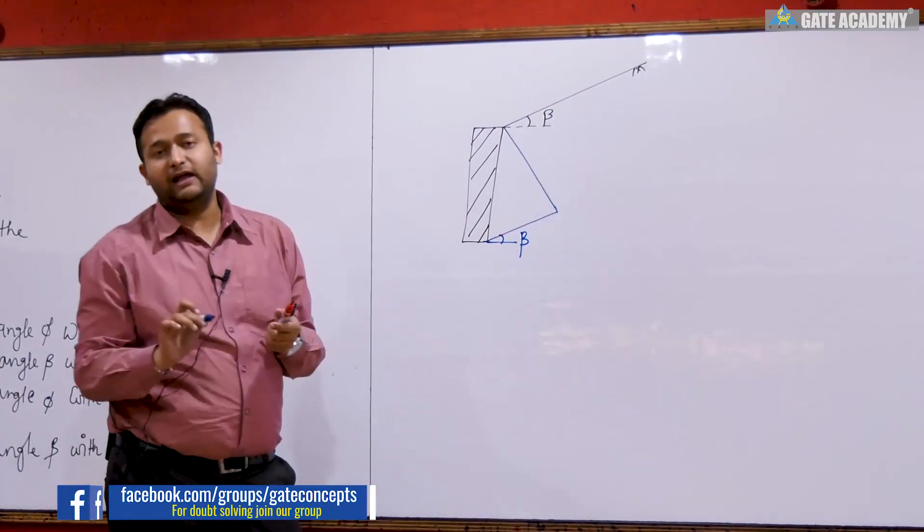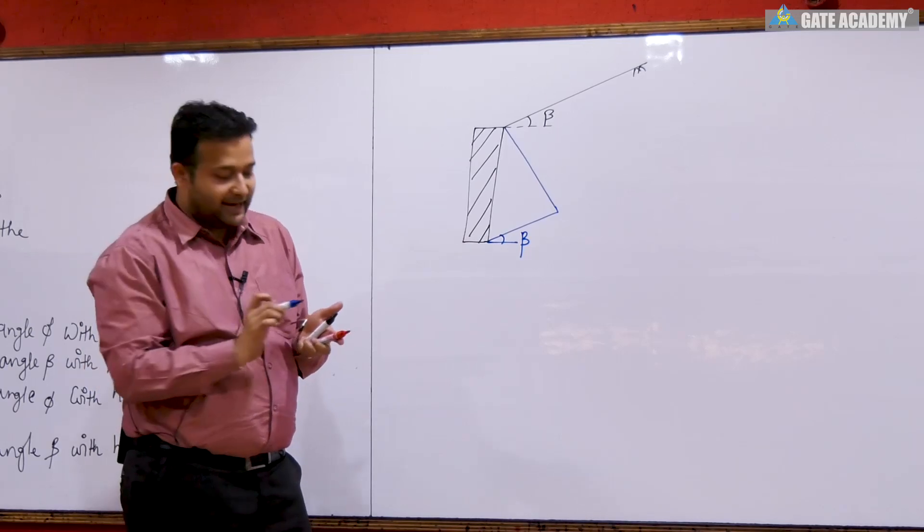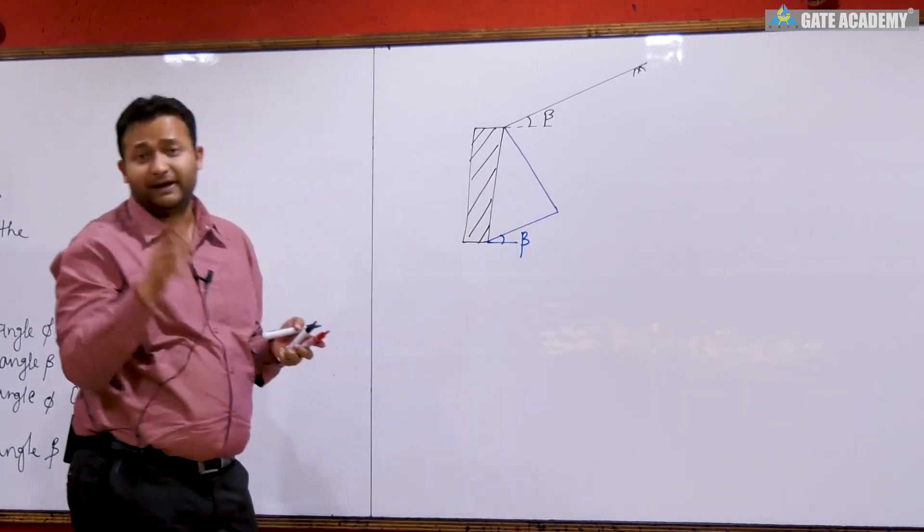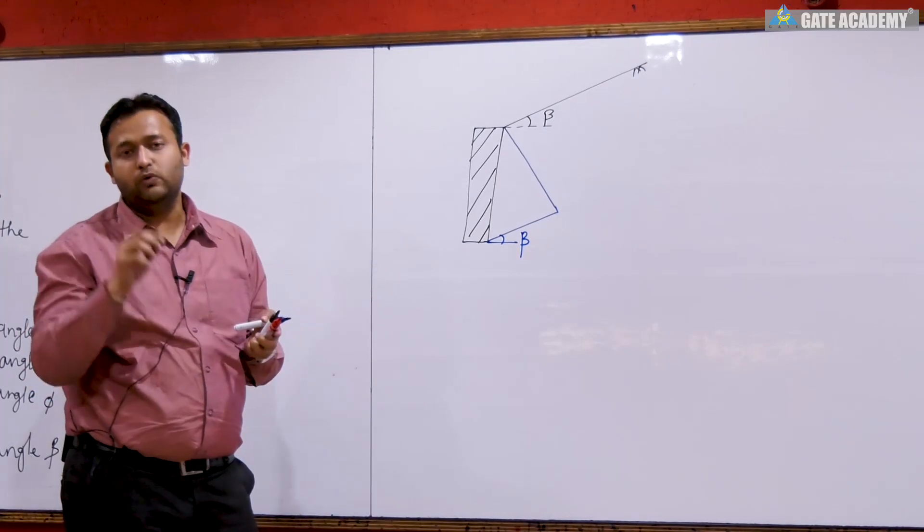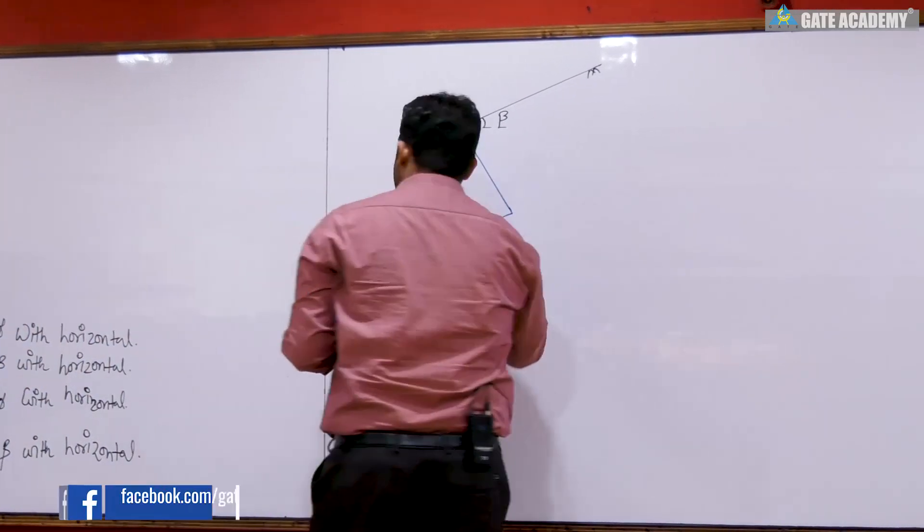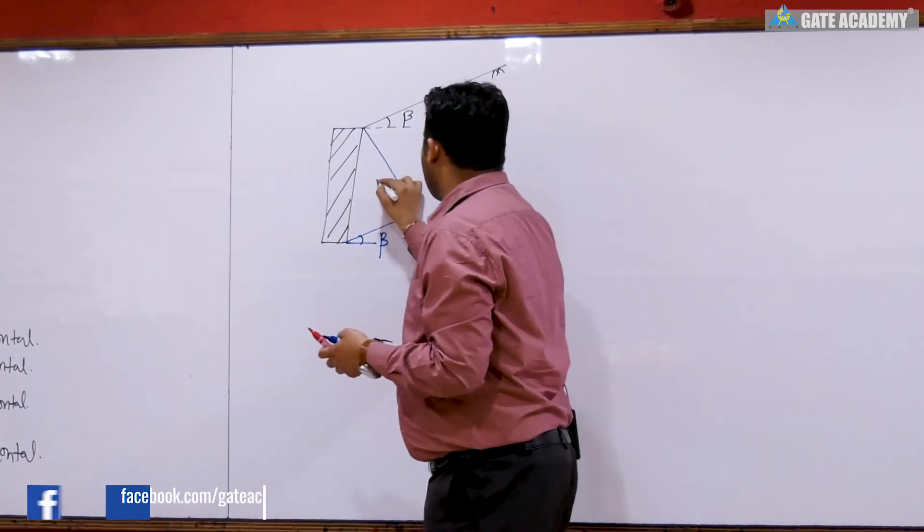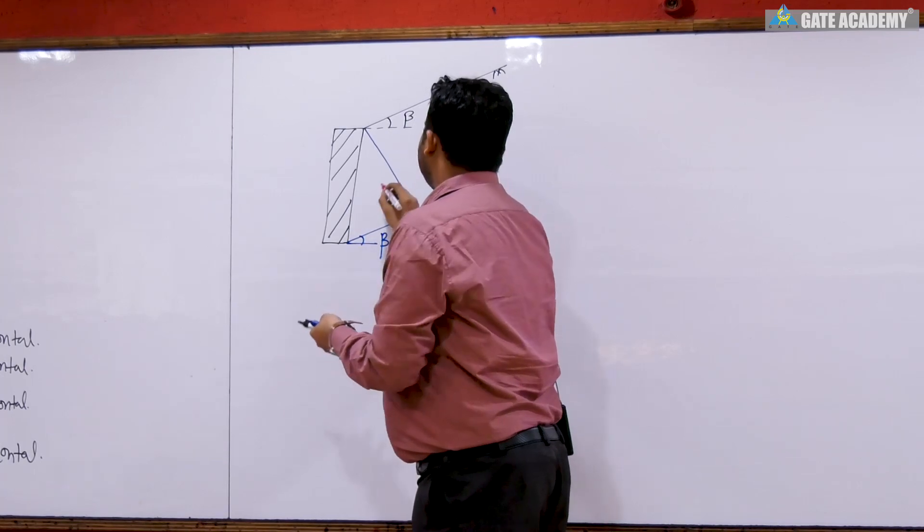This angle will be beta and the resultant force will be half gamma h squared ka, which is the active earth force.